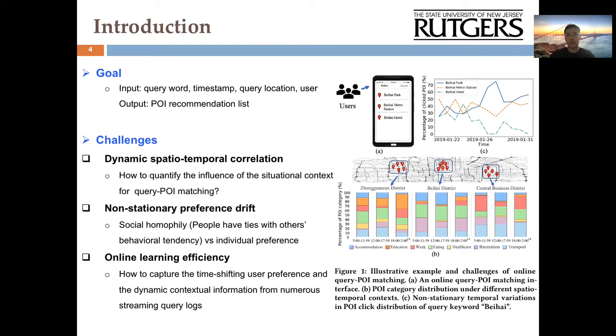The second challenge is non-stationary preference drift. In fact, the relevances between queries and POIs are non-stationary and keep drifting over time. Figure 2C shows that the user preference on POI candidates of corresponding query keywords is just changing over time without significant recurrent patterns. One possible solution is to utilize the social homophily for user behavior modeling. However, it still remains unexplored about how to integrate social homophily while preserving individual preference in the online query-POI matching scenario.